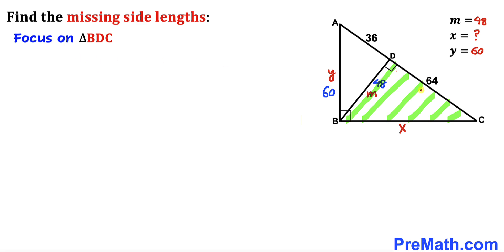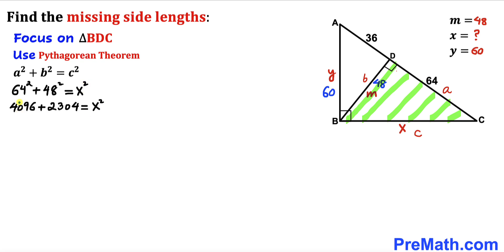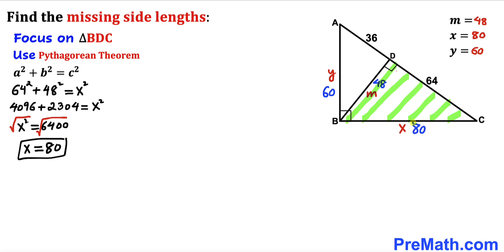Finally, let's focus on right triangle BDC and use the Pythagorean theorem to find X. With A = 64, B = 48, and hypotenuse C = X: 64² + 48² = X², giving 4096 + 2304 = X², so X² = 6400. Taking the square root, X equals 80. So BC = 80.